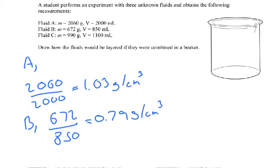OK, so it's looking like A is the heaviest so far, or the most dense I should say. And then C, this time 990 divided by 1,100. So 990 grams divided by 1,100 and I get 0.9 grams per centimetre cubed.